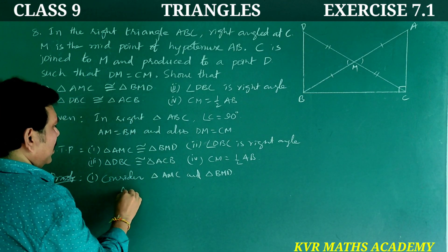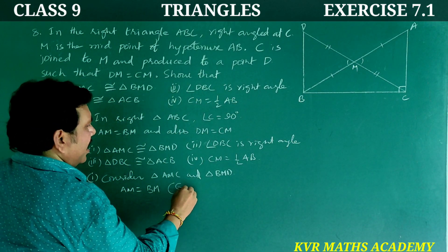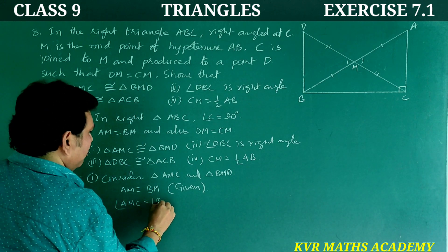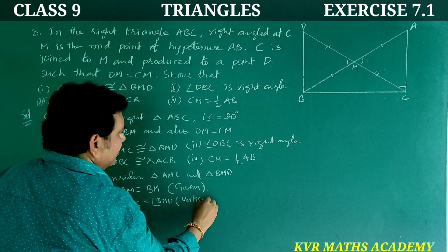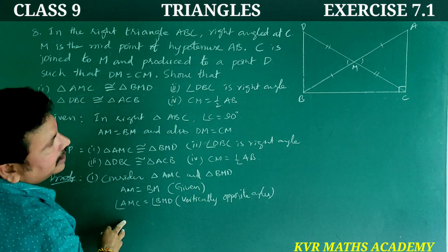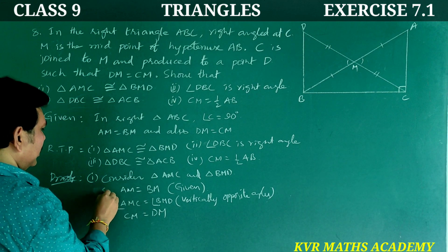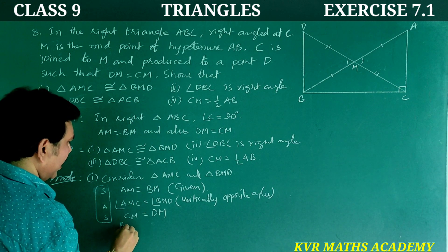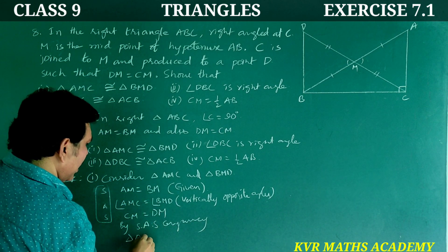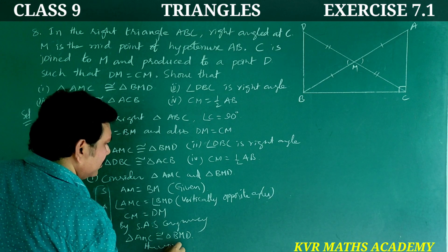AM is equal to BM (given). Angle AMC is equal to angle BMD — vertically opposite angles. CM is equal to DM (given). By SAS congruency, triangle AMC is congruent to triangle BMD. Hence proved, first part.